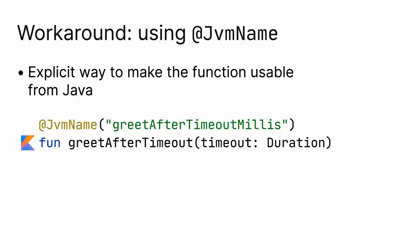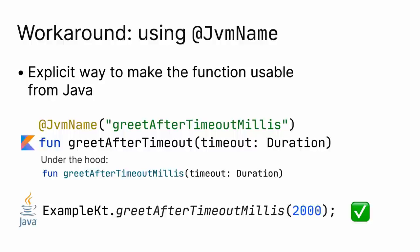If you want to use a function taking an inline value class argument from Java, use a workaround. You can provide an explicit JVM name for this function. That changes the underlying name in the bytecode and makes it visible by this name and usable from Java.